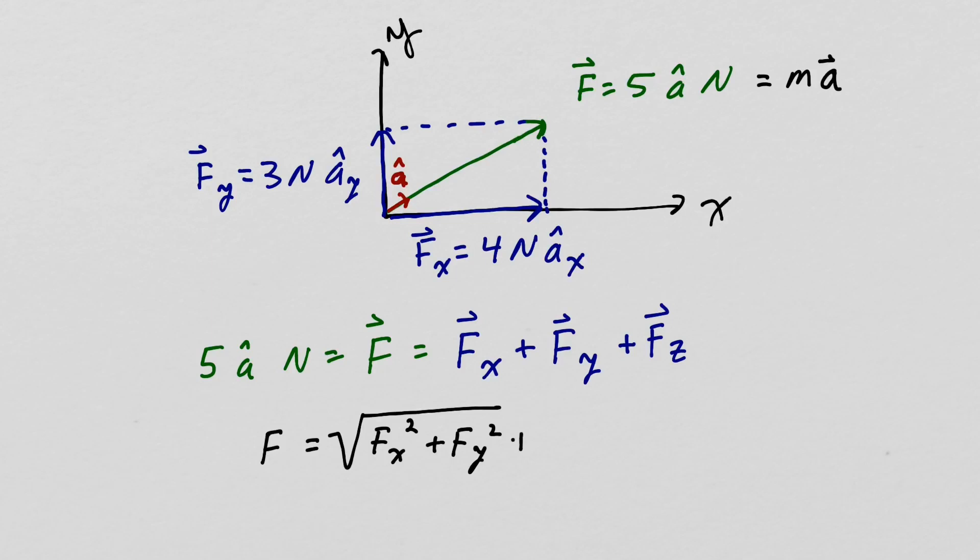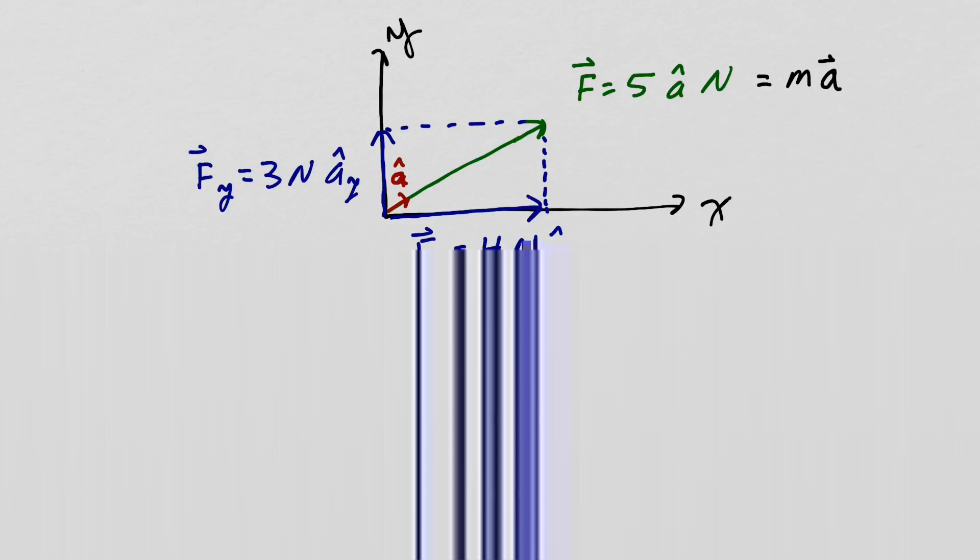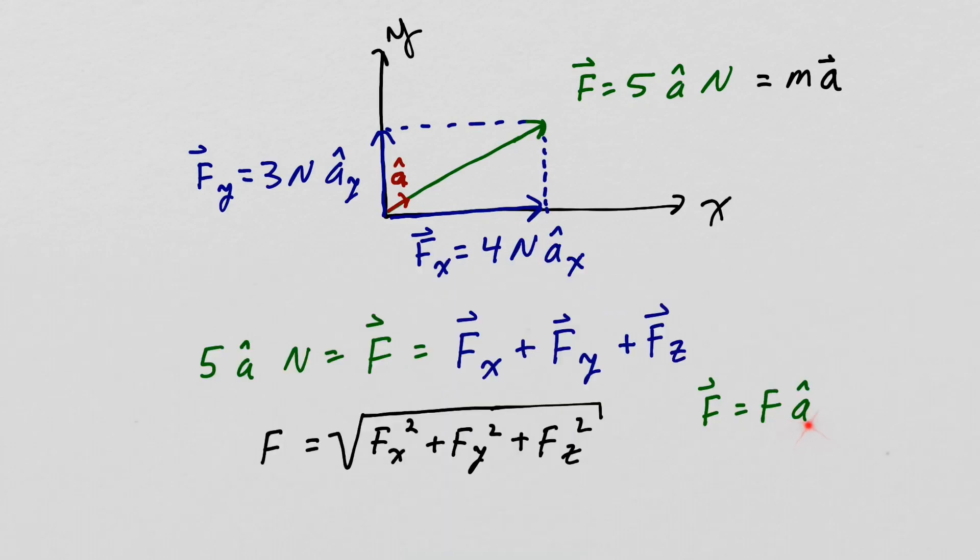If you want to find the unit vector in the direction of the force vector, you just take your force vector and divide by the magnitude of the force vector.